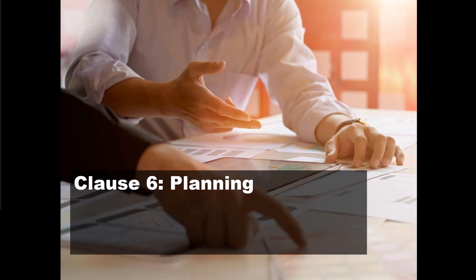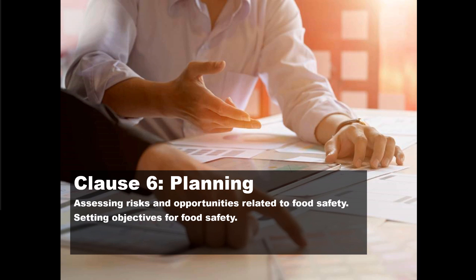Clause 6 covers planning. You have to plan when designing a food safety management system — determining what potential issues you could have around food safety, developing plans, addressing risks, and identifying opportunities to prevent food safety issues. You need to define your food safety objectives and plan for changes. For example, in a dairy, if you change to a different trucking company, how will you control that supplier? Planning for changes is all required under clause 6.